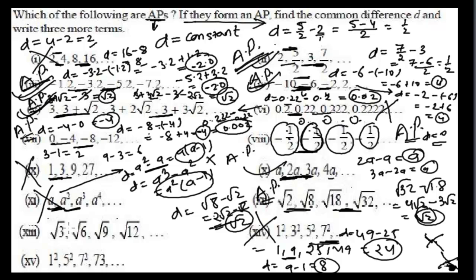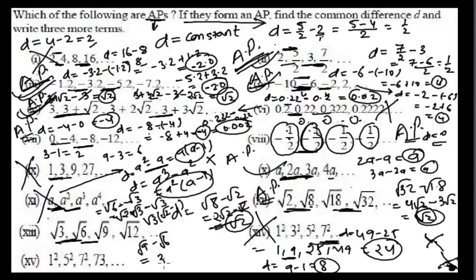For the sequence √3, √6, √9...: the common difference is √6 minus √3 equals √2·√3 minus √3 equals √3(√2 minus 1). The next difference is √9 minus √6 equals 3 minus √6 equals √3·√3 minus √3·√2 equals √3(√3 minus √2). Since √3(√2-1) does not equal √3(√3-√2), the common differences are not equal, so this is not an arithmetic progression.